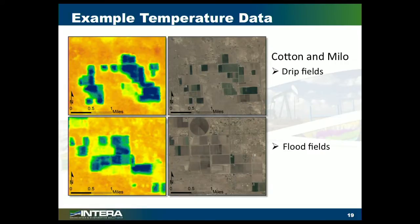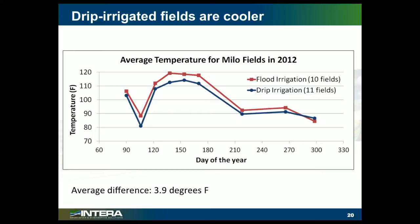Here's some additional example data showing some drip irrigated fields up top — very cool, very blue — and then some flood irrigated fields down at the bottom, not quite as blue. The interesting thing we found was that the drip irrigated fields were in general cooler, which seemed to indicate higher water use. That's a little counterintuitive and kind of a controversial result. The temperature relationship is showing that flood irrigated fields are actually probably consuming less water than the drip irrigated fields.